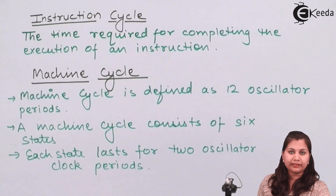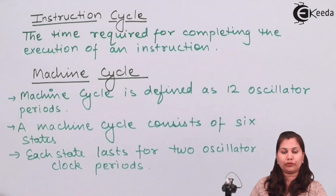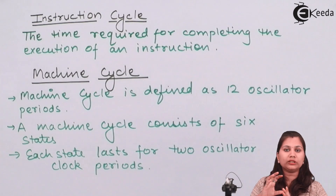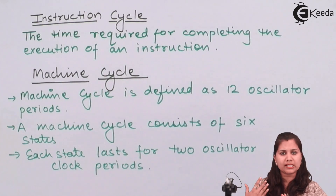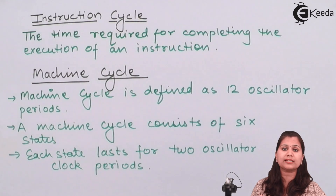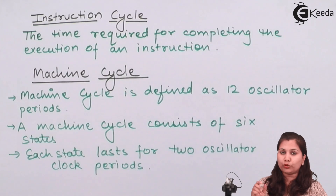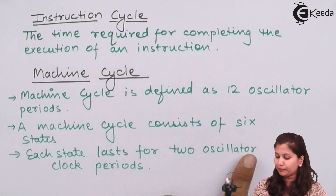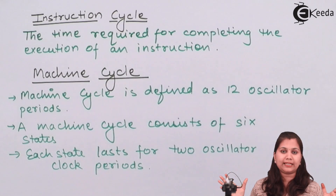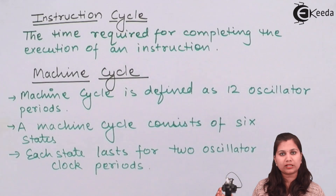Machine cycle is defined as 12 oscillator periods. In every microcontroller, we have an oscillator which provides the clock frequency to all the internal circuitry. All operations — read, write, or any external input-output operations — are related to the oscillator frequency, that is, clock frequency. So machine cycle is defined as 12 oscillator clock periods, meaning 12 oscillator clock periods equals one machine cycle. In a machine cycle, there are six states, and each state lasts for two oscillator clock periods, giving a total of 12 oscillator clock periods.